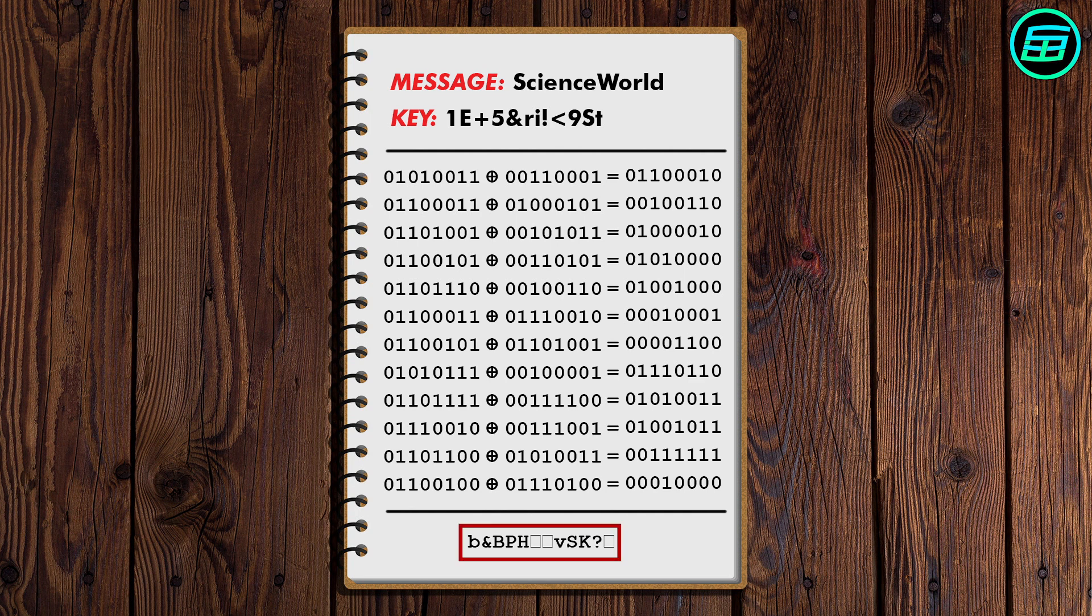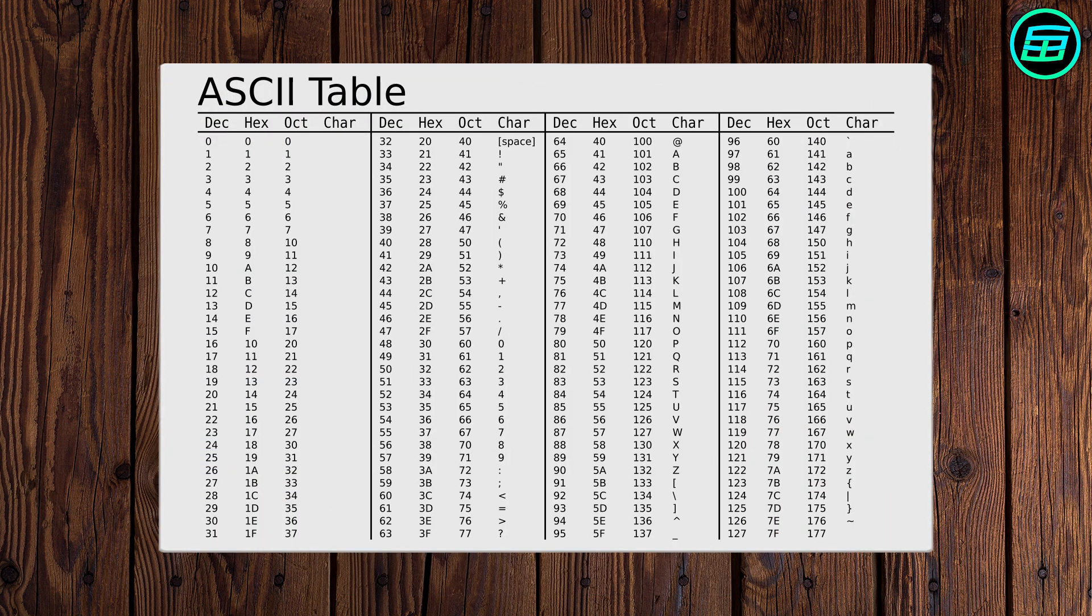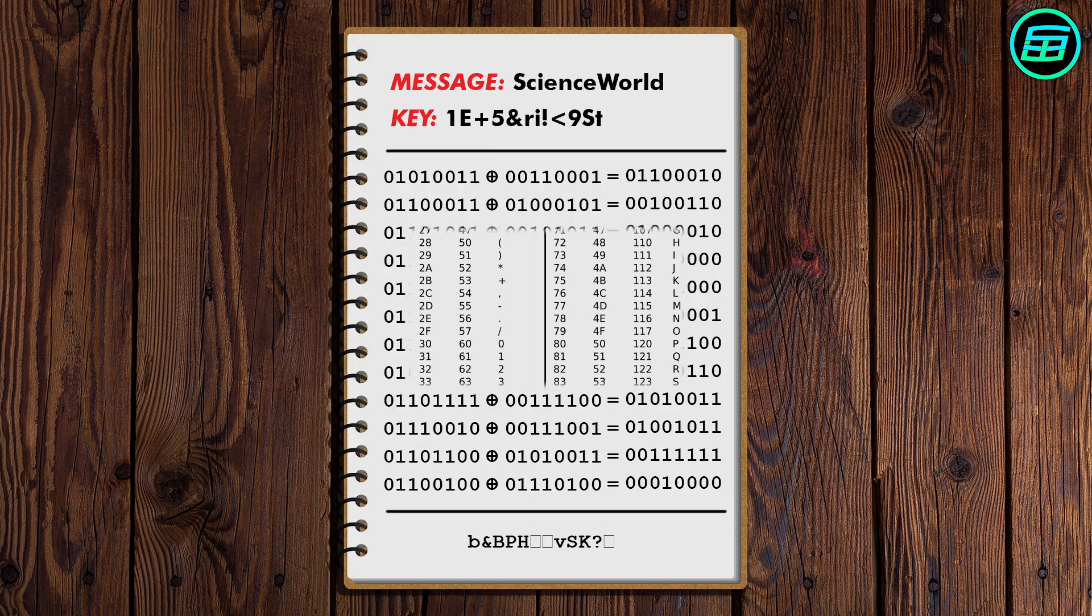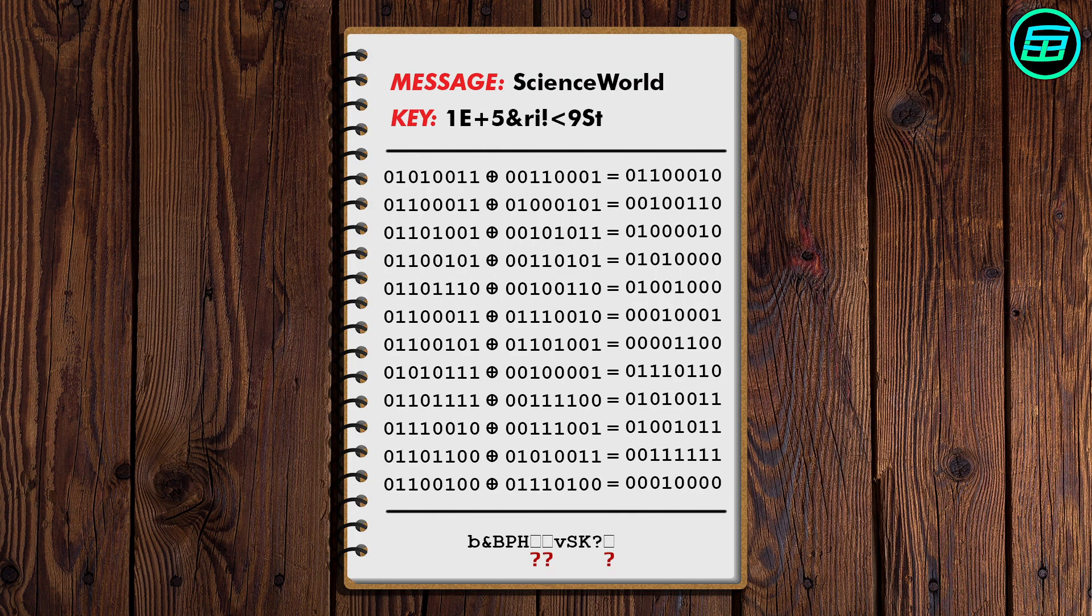In the ASCII table, some values don't have visual signs. The encrypted message can be sent as a string only if all the characters make sense. It can also be sent as binary or, if we want it to be shorter, as hexadecimal.